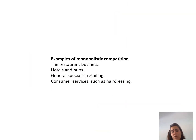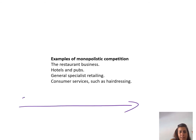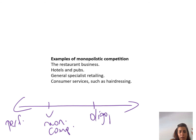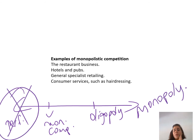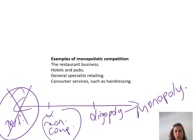Let's talk about monopolistic competition. On this scale, we have perfect competition at one end, then monopolistic competition, then oligopoly — which is less competitive — and then monopoly at the other extreme. I am done with perfect competition, and an example would be agricultural products. Examples of monopolistic competition include the restaurant business, hotels, and general specialist retailing.